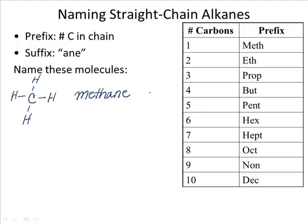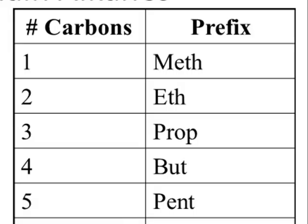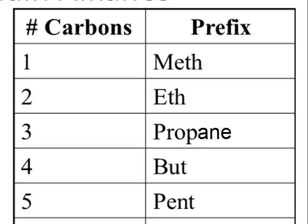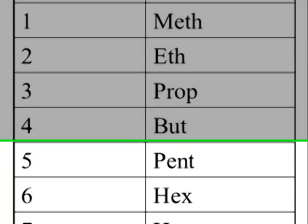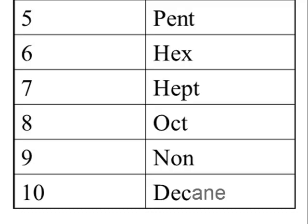When it comes to naming straight chain alkanes, it really is this simple. Let's just go down the prefixes so you can hear the names pronounced. If you have a molecule that has one carbon, you have methane. Two carbons gives you ethane. Three carbons would be propane, and you'll notice some of these sound familiar. Four carbons gives you butane. Five would be pentane. Six, hexane. Seven, heptane. Eight, octane. Nine, nonane. And ten, decane.